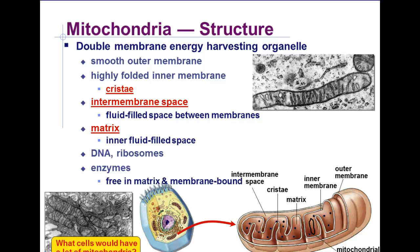The mitochondrial matrix is where the Krebs cycle happens and is also the location for the mitochondrial DNA, ribosomes, and its enzymes. Inside the mitochondrial membrane, the structure consists of a smooth outer membrane and a highly folded inner membrane called the cristae.